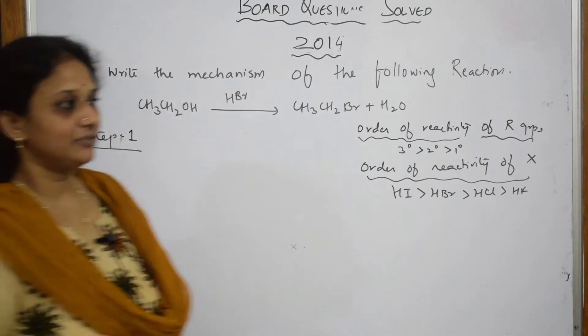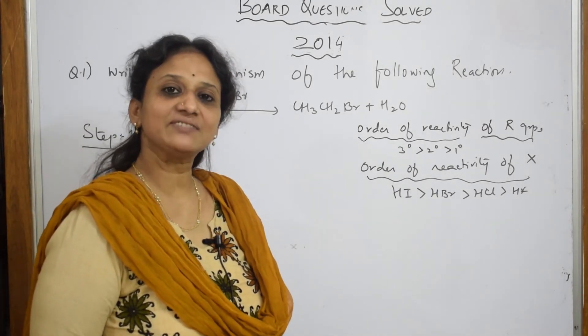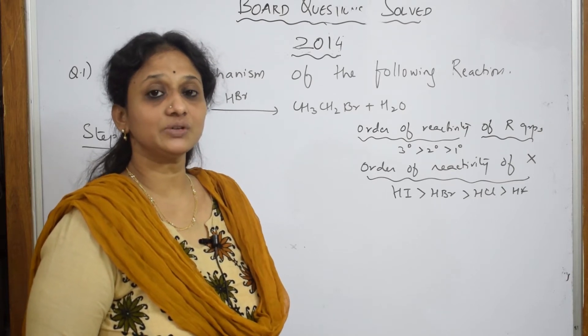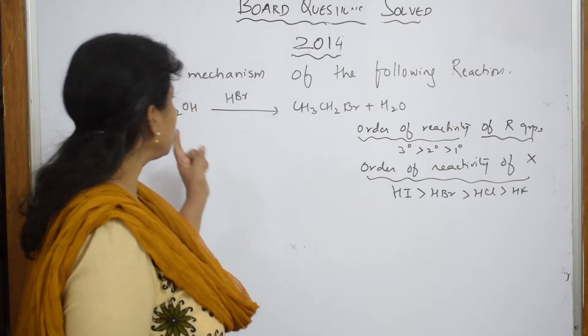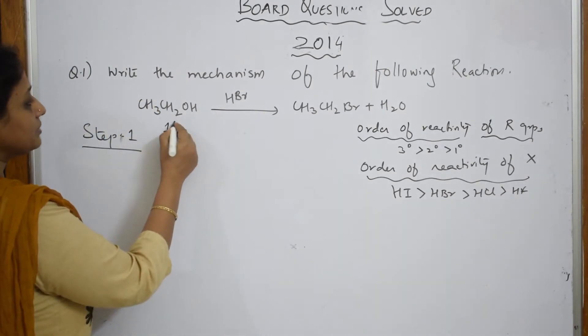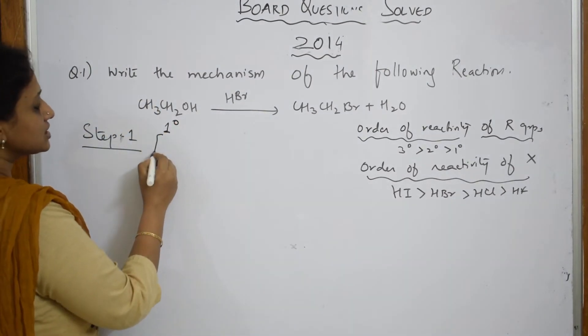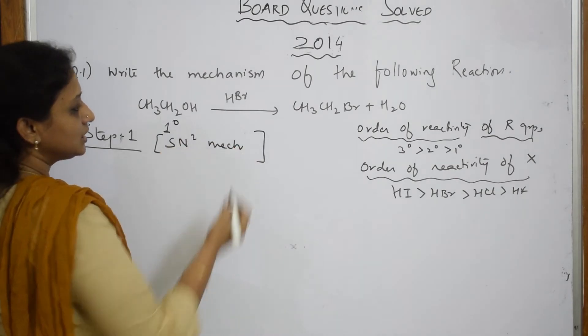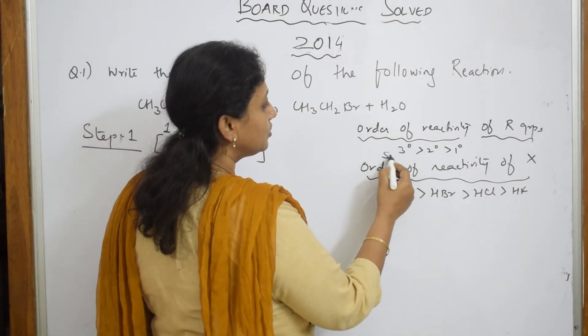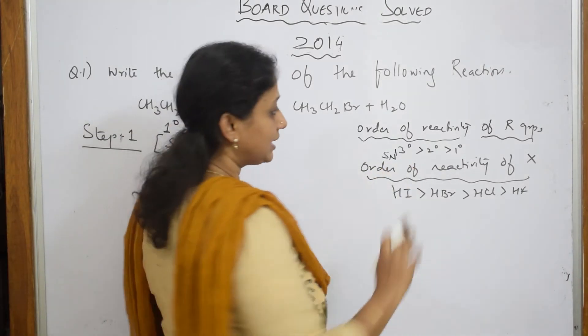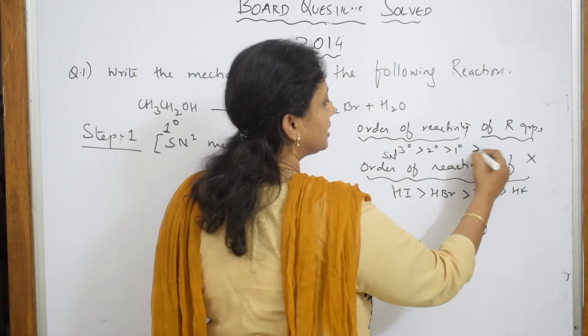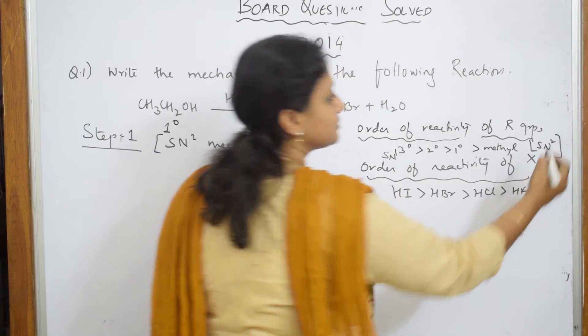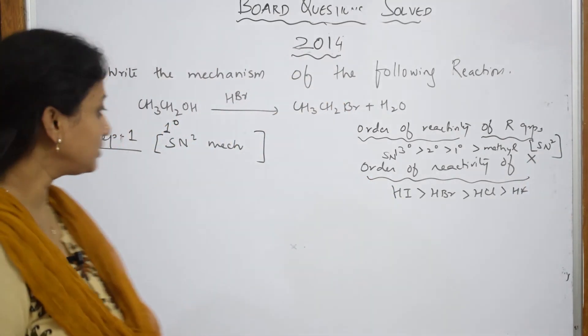Most important thing is we remember when we have done SN1 SN2 mechanism. When we took tertiary we went into SN1 mechanism. This is your primary alcohol. This whole mechanism is going to follow SN2 mechanism. This once again tertiary will undergo SN1 mechanism and your primary or your methyl groups will undergo SN2 mechanism.